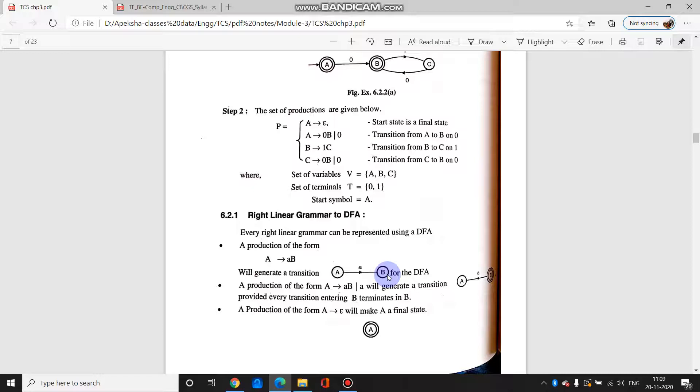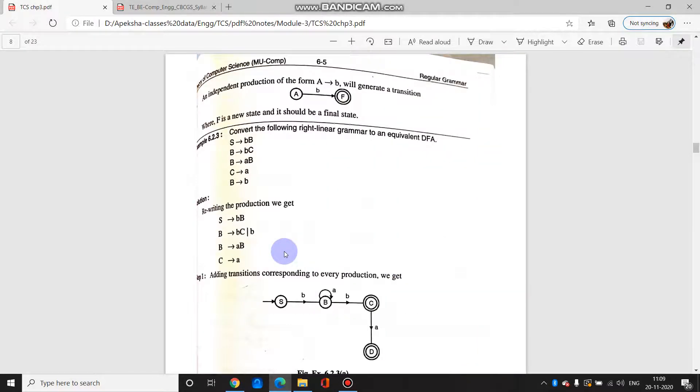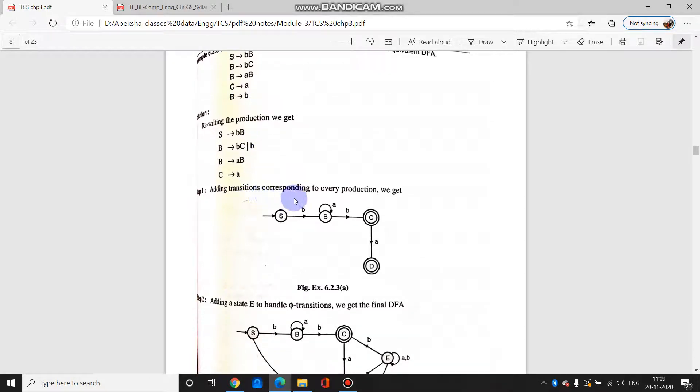Next we will be converting right linear grammar to DFA. You are given right linear grammar and you have to convert it to DFA. So see, these are the productions given. Rewriting the productions we get s tends to b, b tends to b c and a b, so b tends to b is combined here. So adding the transitions corresponding to the grammar, s is the start symbol. S tends to b, so s makes a transition to b when symbol b.